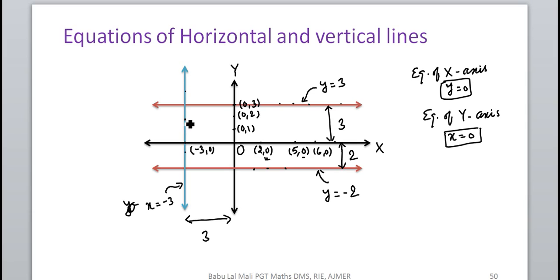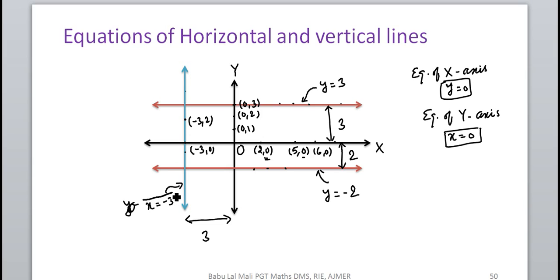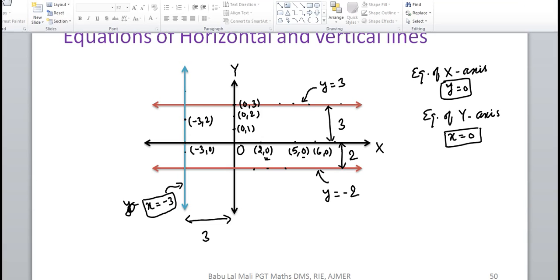If we have a point on this line, its coordinate is (−3, 2). So for any point on this line, the x-coordinate is equal to −3. Therefore, this line's equation is x = −3.